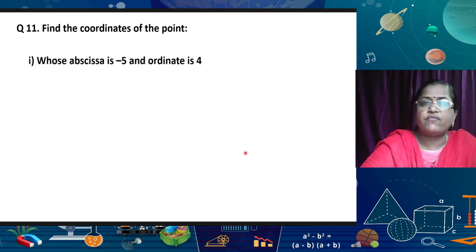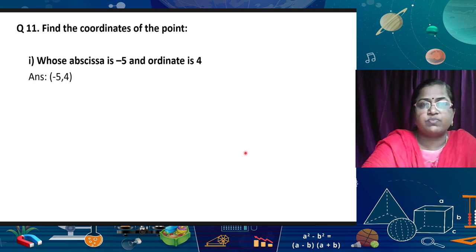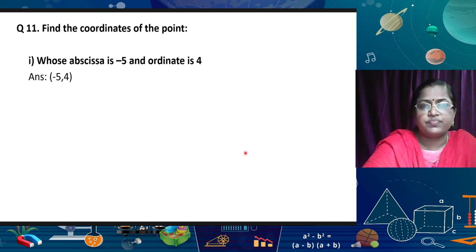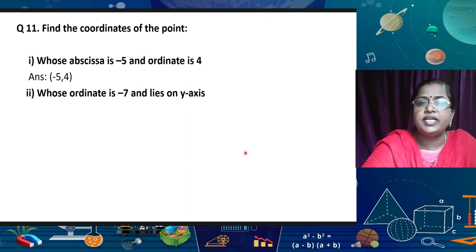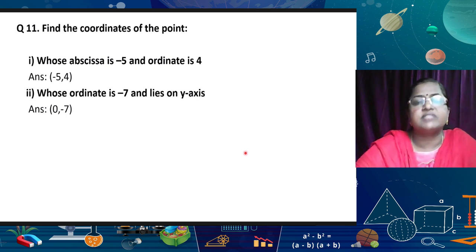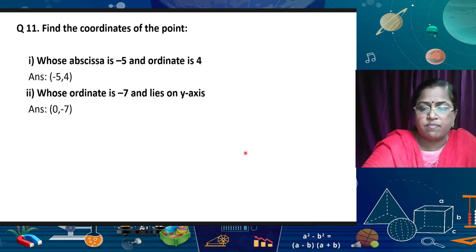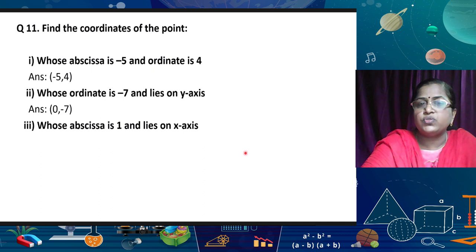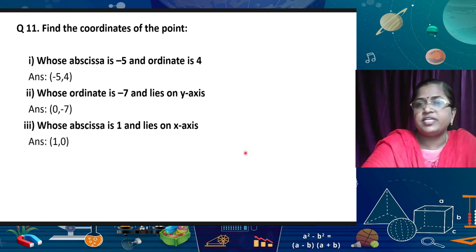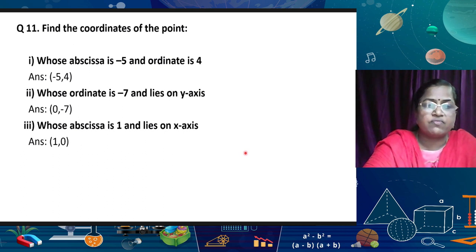Now: find the coordinates of the point whose abscissa is minus 5 and ordinate is 4. The answer is (−5, 4). The second one: whose ordinate is minus 7 and it lies on the y-axis. If it lies on the y-axis, the x-coordinate is 0. So the answer is (0, −7). Third: whose abscissa is 1 and it lies on the x-axis. Abscissa is 1 means the first coordinate is 1, and since it lies on the x-axis, y = 0. So the coordinate is (1, 0).